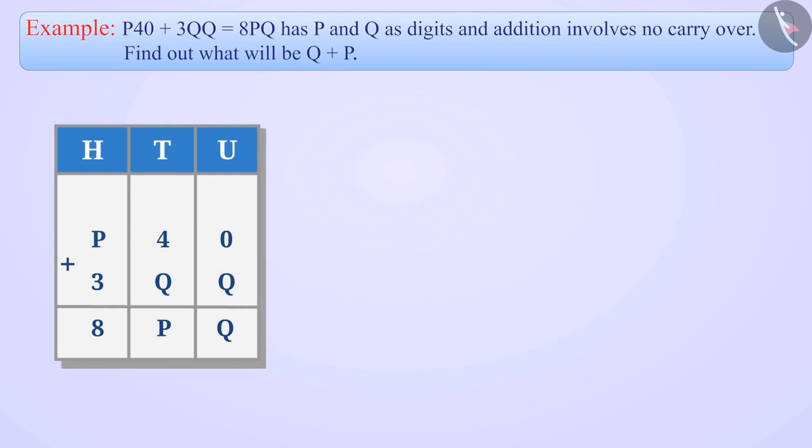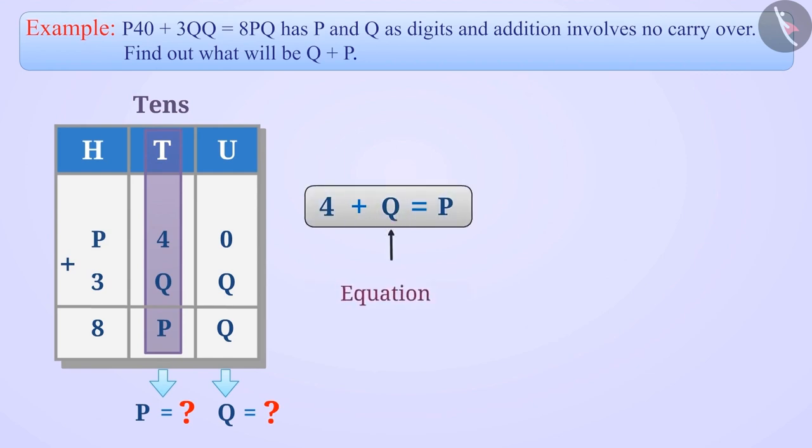Let's write it in this way. In the units place, we see that 0 plus q equals q. At this place, we do not know the value of q. In the next column of tens, we see that 4 plus q equals p. But we neither know the value of p nor q, so we cannot find the values from this equation.